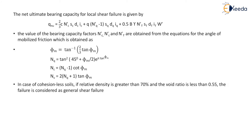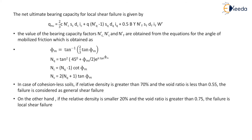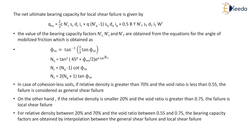In the case of cohesionless soil, if the relative density is greater than 70% and void ratio is less than 0.55, the failure is considered as general shear failure. If the relative density is smaller than 20% and void ratio is greater than 0.75, the failure is local shear failure. For relative density between 20% and 70% and void ratio between 0.55 and 0.75, the bearing capacity factors are obtained by interpolation between general and local shear failure.